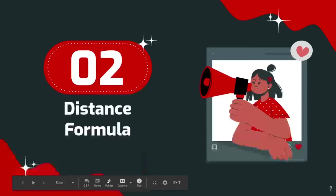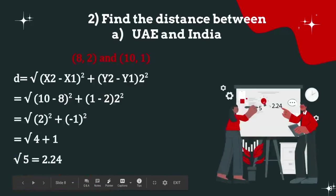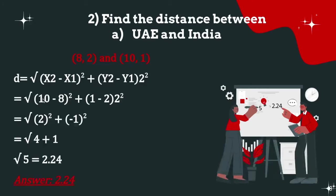Task 2 is the distance formula. Find the distance between UAE (8, 2) and India (10, 1). The distance formula is d = √((x2 - x1)² + (y2 - y1)²). Replacing the values: √((10 - 8)² + (1 - 2)²) = √(4 + 1) = √5. Using a calculator, the answer is 2.24.